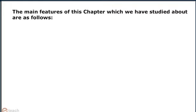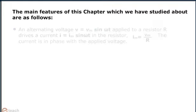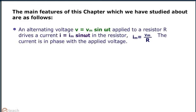The main features of this chapter which we have studied about are as follows. An alternating voltage V equals Vm sin ωt applied to a resistor R drives a current I equals Im sin ωt in the resistor, where Im equals Vm by R. The current is in phase with the applied voltage.